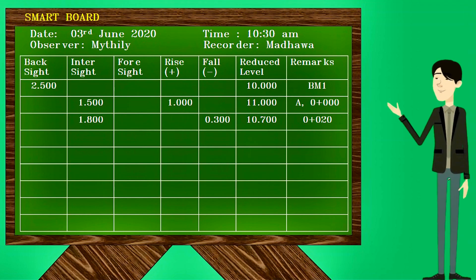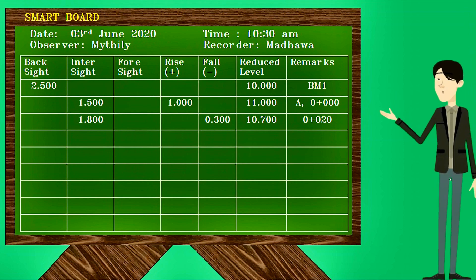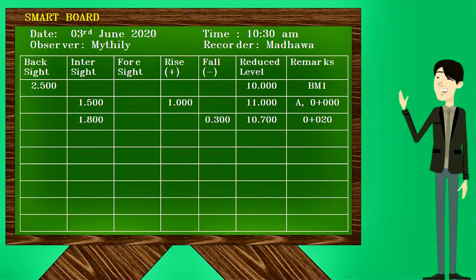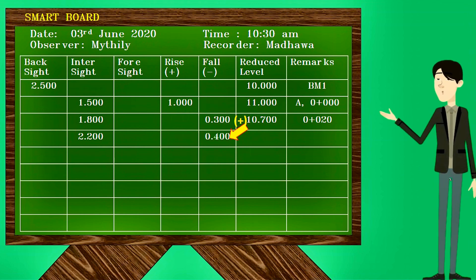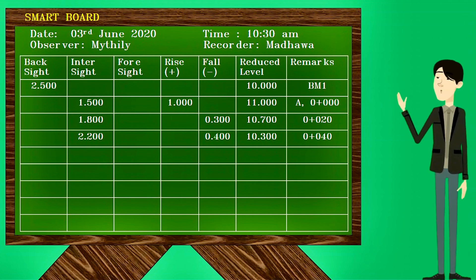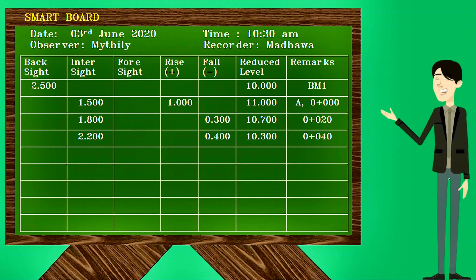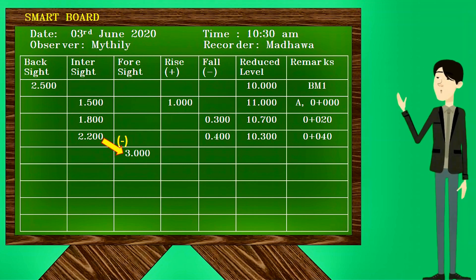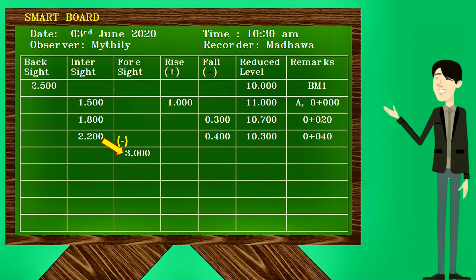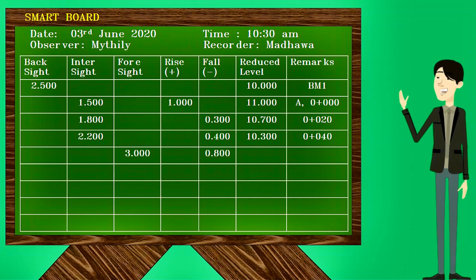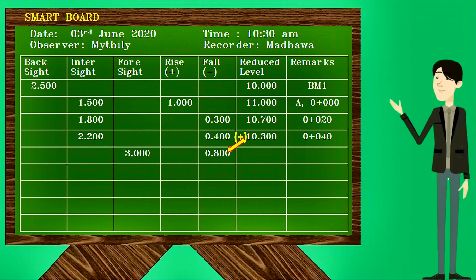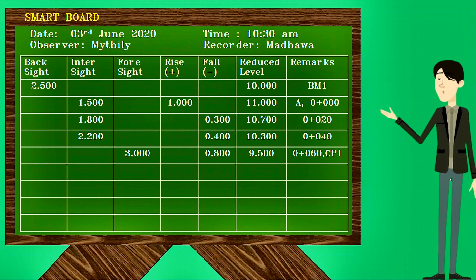We will see how the readings at chain ages 40 meters and 60 meters are recorded. Since the reading at 40 meters is an intermediate sight, record it in the intersight column, find the rise or fall value, and calculate the reduced level. The reading at 60 meters is very important since it is the last reading from this instrument station; therefore, it should be recorded in the foresight column. The rise or fall is found by deducting the foresight reading of 3 meters from the previous intersight reading of 2.2 meters, giving minus 0.8 meters, which goes in the fall column. Since this is a changing point, note it in the remarks column.